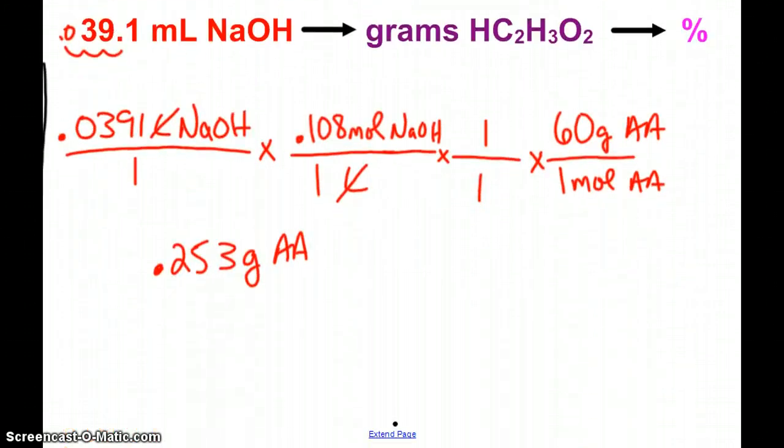And so I can figure out the mass percent, dividing by 5, and here we see that we get 5.06% acetic acid by mass in that vinegar.